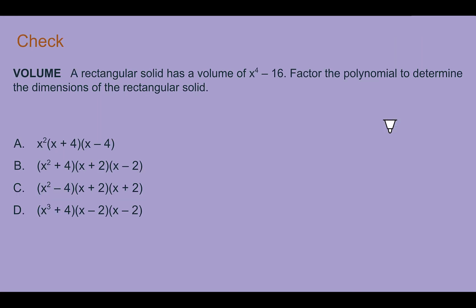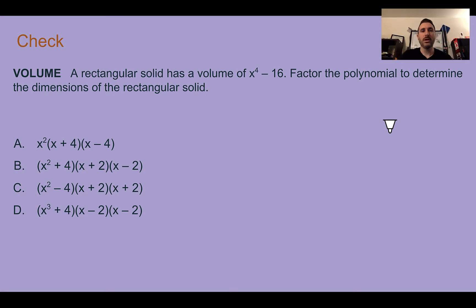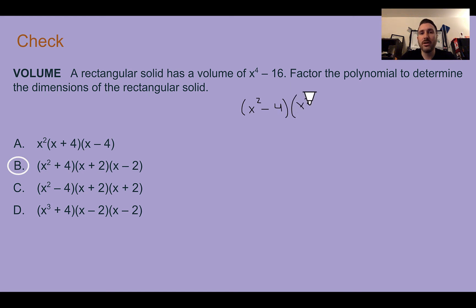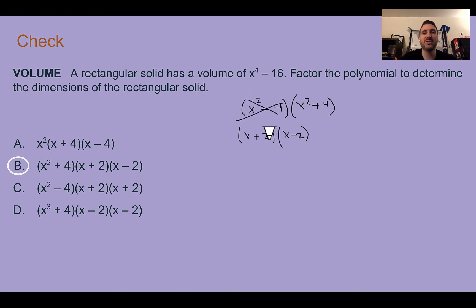Check your understanding: read through the situation and choose the best answer. Pause the video now and complete the check. Check your answer — you should have said b. The first time through, you end up with x squared minus 4 and x squared plus 4. The first part is still a difference of squares: x plus 2 and x minus 2. The second part stays, so the full factored form is x plus 2, x minus 2, and x squared plus 4, which is answer b.